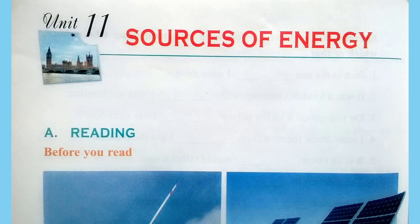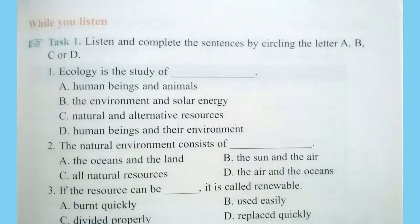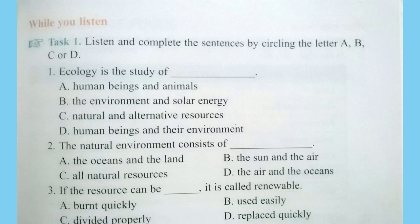Task 1. Listen and complete the sentences by circling the letter A, B, C, or D. The natural environment includes all natural resources that are necessary for life: the air, the oceans, the sun, and the land. Because they are vital for life, these resources must be protected from pollution and conserved. Ecologists study their importance and how to use them carefully. According to ecologists, resources are divided into two groups: renewable and non-renewable.